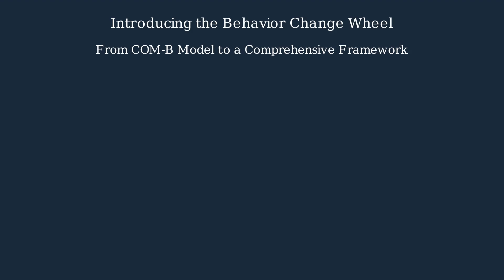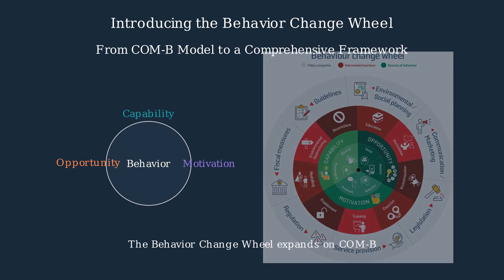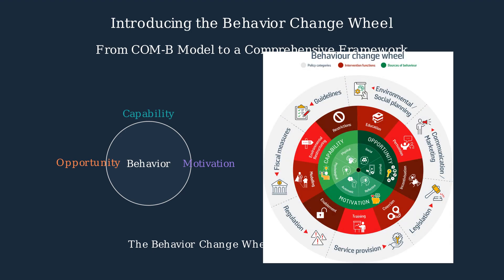We now transition from the COM-B model to the complete behavior change wheel framework. The COM-B model provided us with the core components of behavior—capability, opportunity, and motivation. The behavior change wheel builds upon these components, forming a comprehensive framework for designing effective interventions.